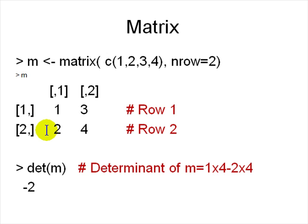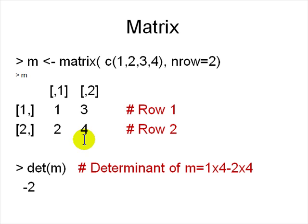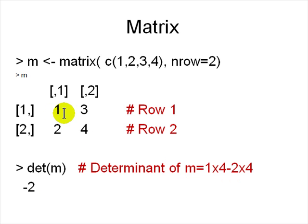Another common data structure is the matrix. You give it a bunch of values and specify the number of rows or columns. For example, 'matrix(1:4, nrow=2)' fills column-major: column 1 gets 1 and 2, column 2 gets 3 and 4 — and you can assign row and column names. The determinant of a 2×2 matrix like [[1,2],[3,4]] is 1×4 − 2×3 = −2.